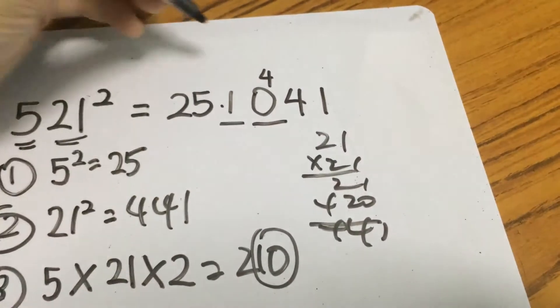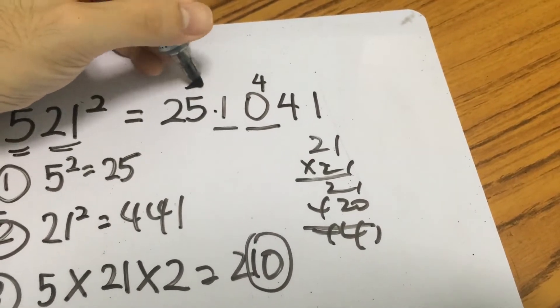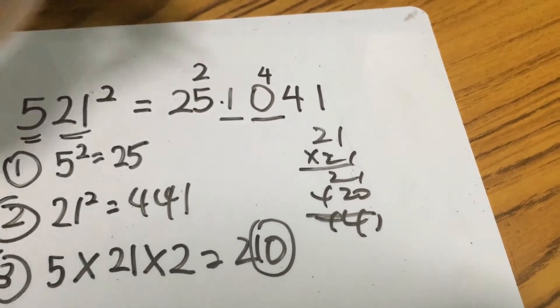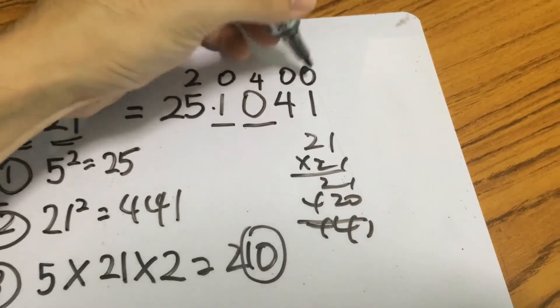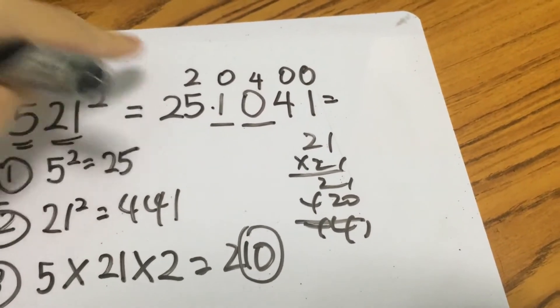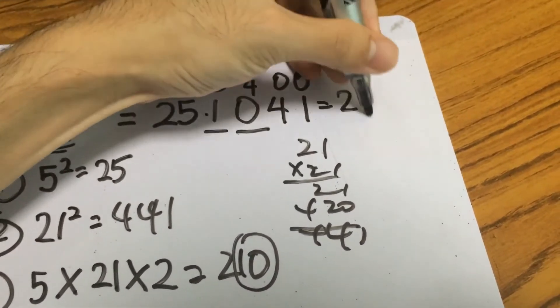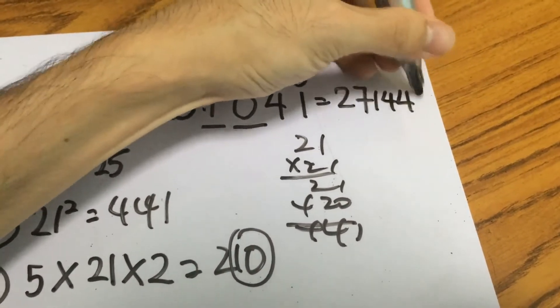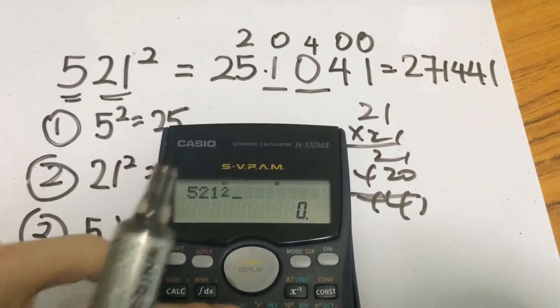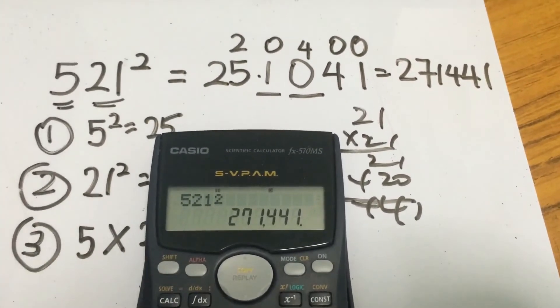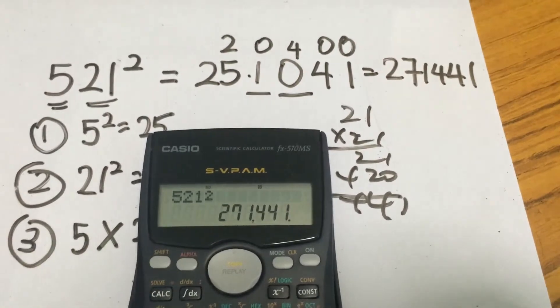Alright and the 2 itself will be carried over like this and what we will do is that we will sum it up. So in this case the answer to 521 squared is this plus this that will be 271441. Here's a quick check using the calculator and here we get the answer is 271441.